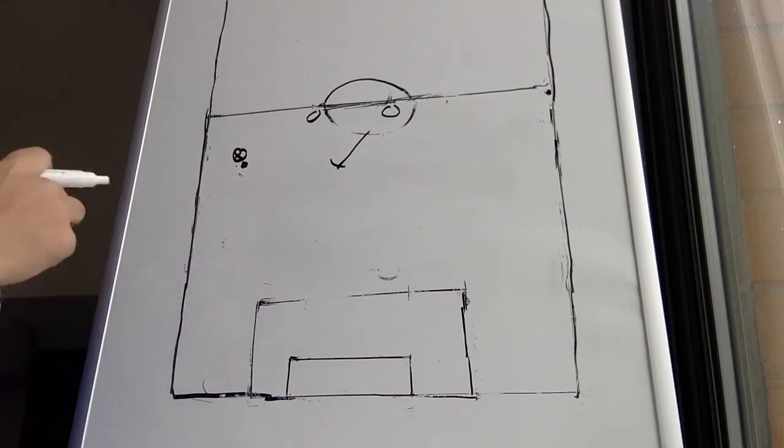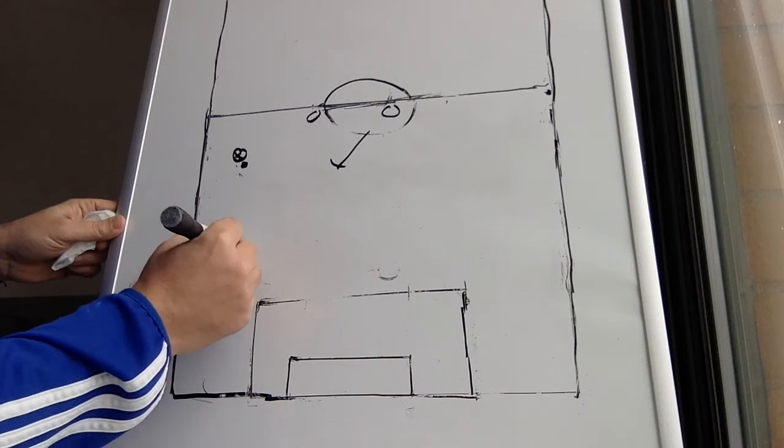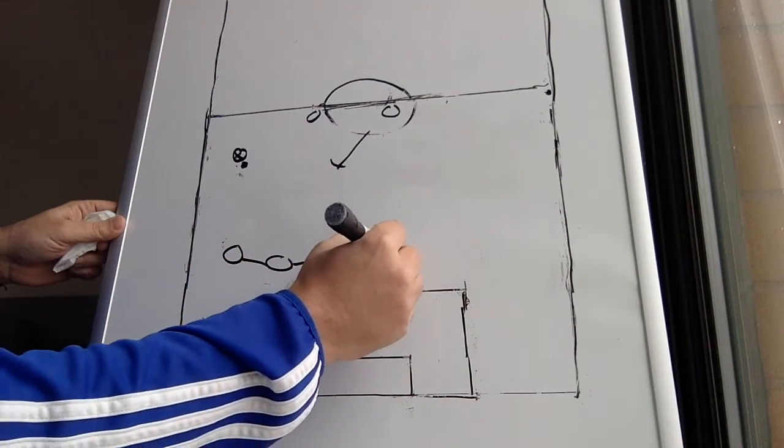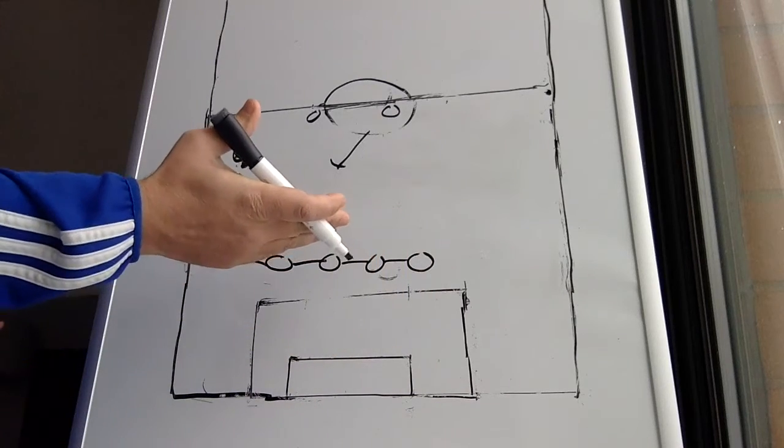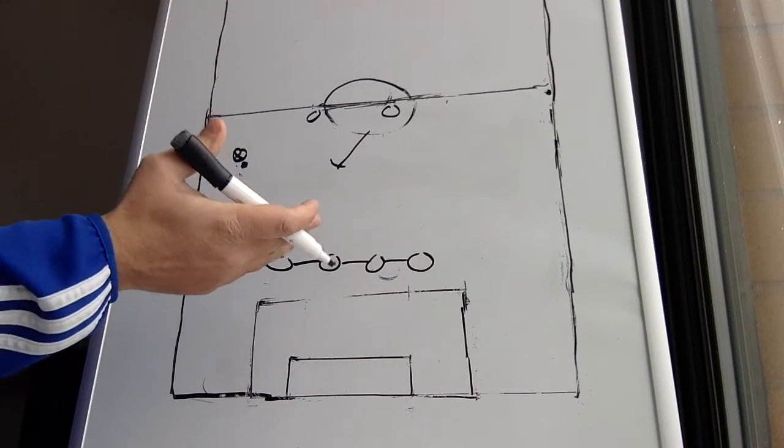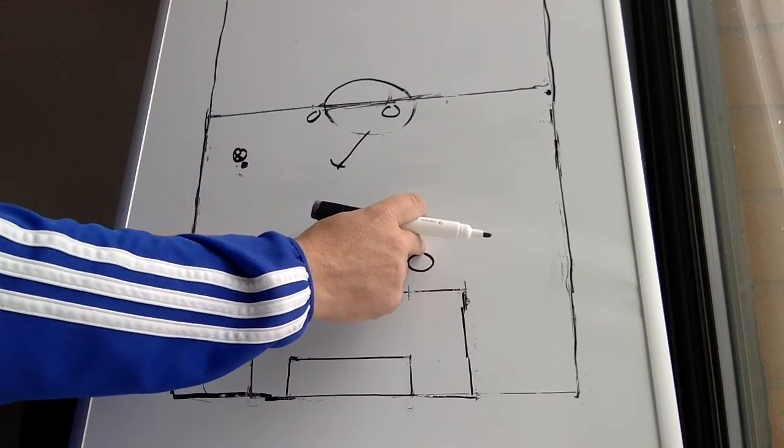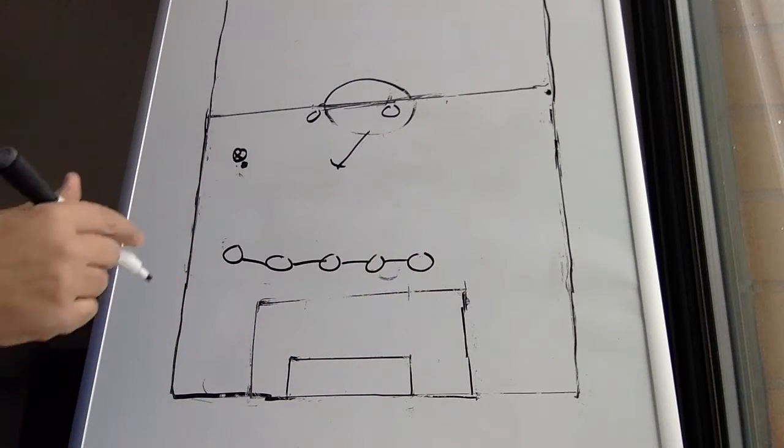There's other ways to defend. So let's just say that we dropped into 5 in the back again. And 5 in the back, this could be a 3-4-3, this could be a 3-5-2. All we simply did was drop our wingers. The wingers drop in.